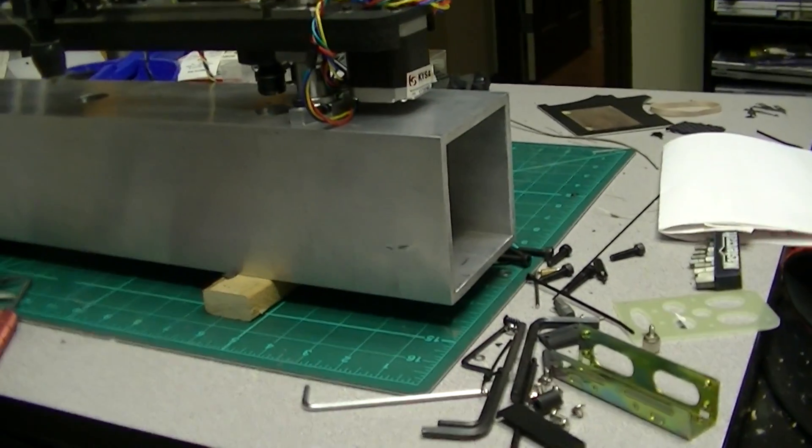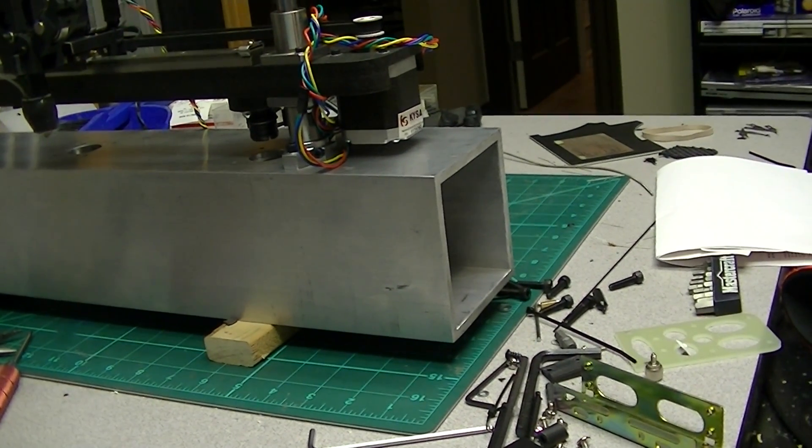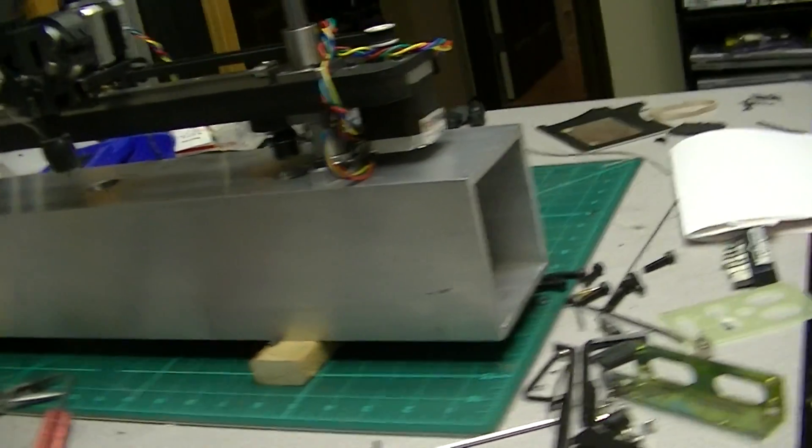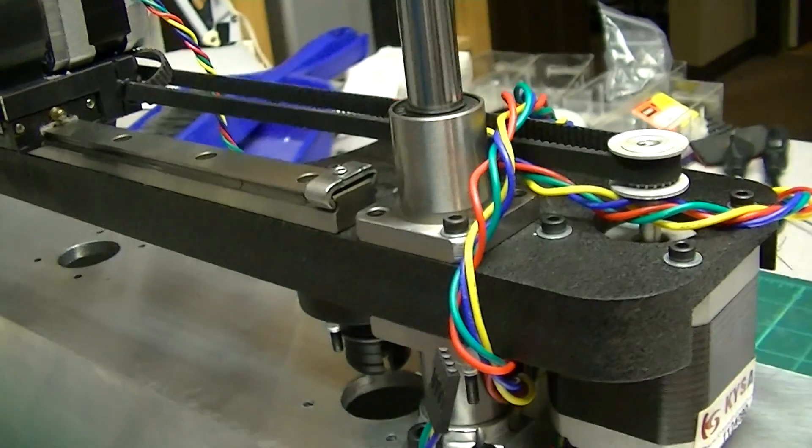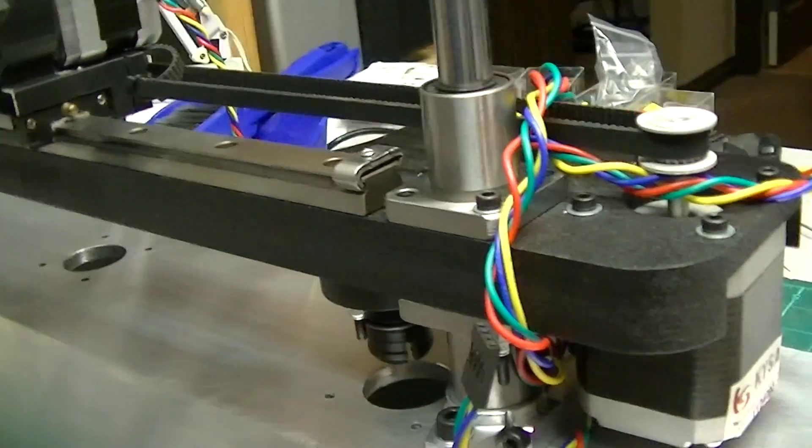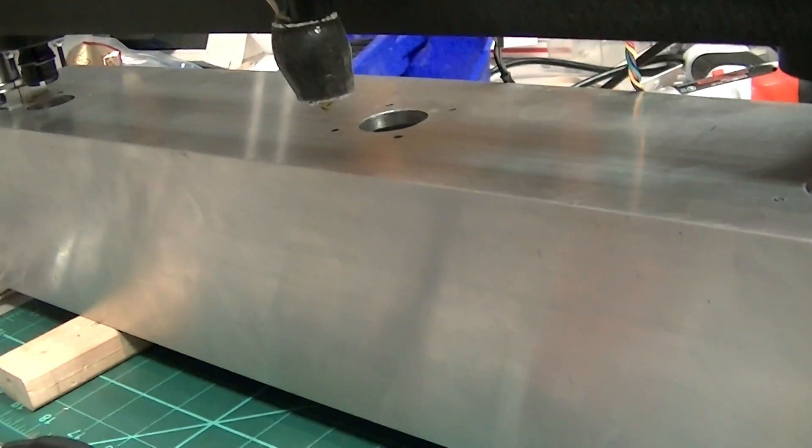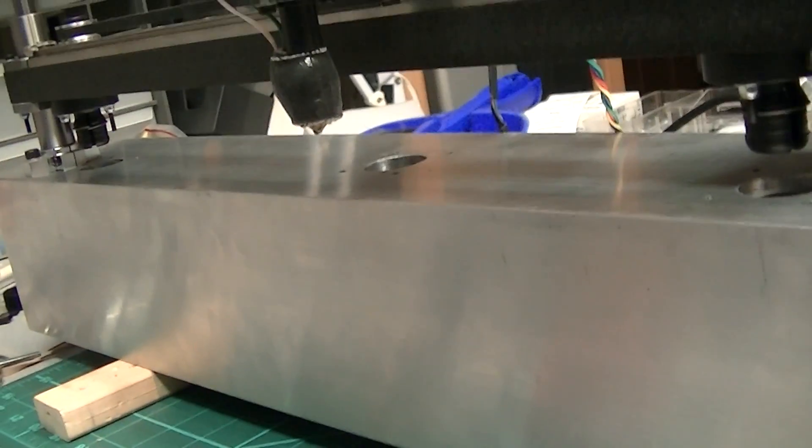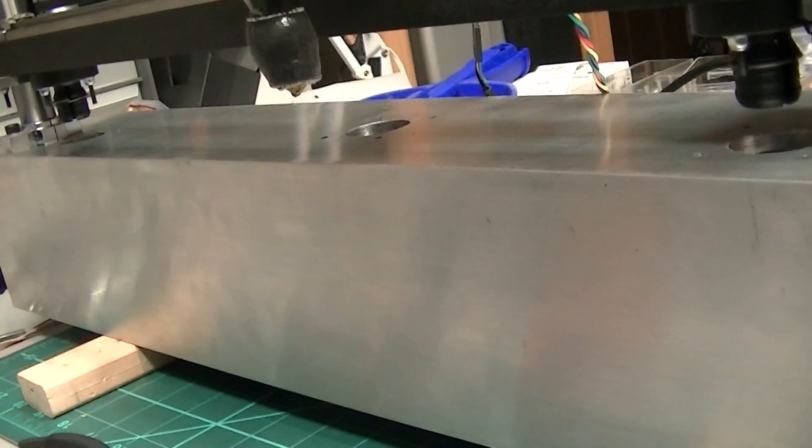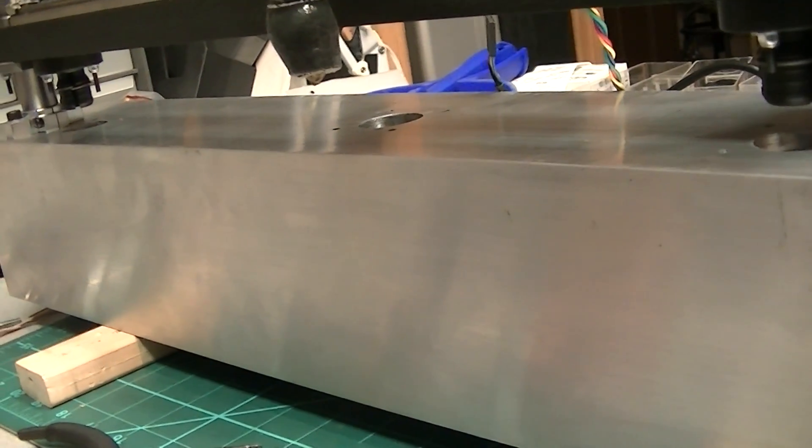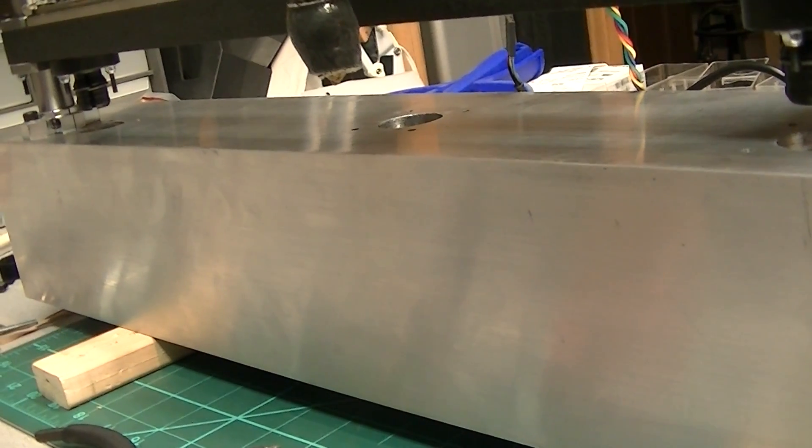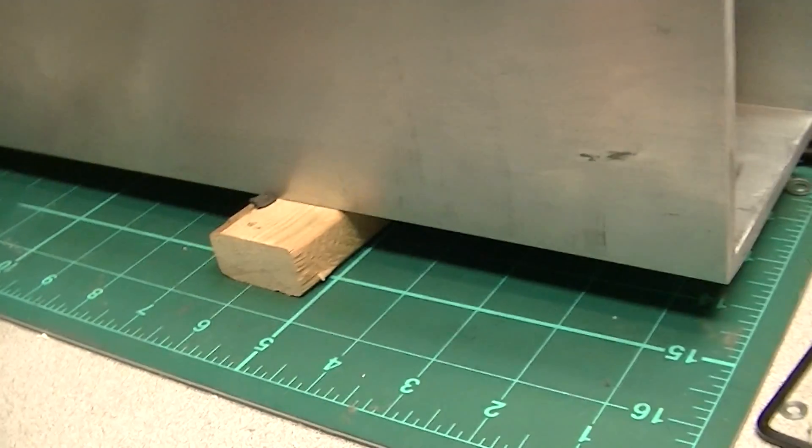Once I get it all done, I'll print out some nice end caps for each end in black and I'm going to paint it the same color that I painted the ZX slide here. I've got that truck bed liner, it sticks to anything. I'll clean it off, sand it up and paint it, and it should give me a nice looking finish.